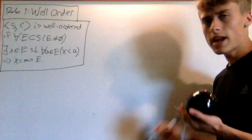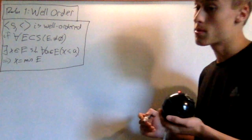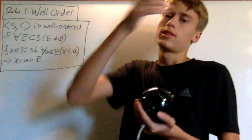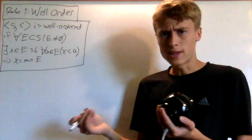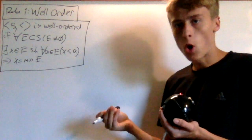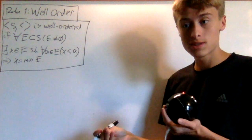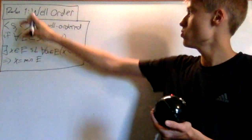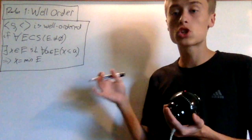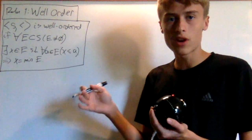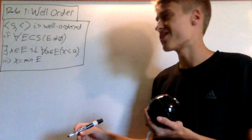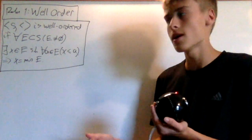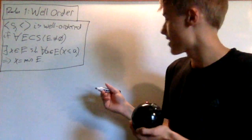The next definition, and this one's also pretty important, is order isomorphism. This is like isomorphisms in algebra and homeomorphisms in topology, extended to orders. So it's a structure-preserving map — you can probably already tell what the structure-preserving property will be, but let's define it anyway.